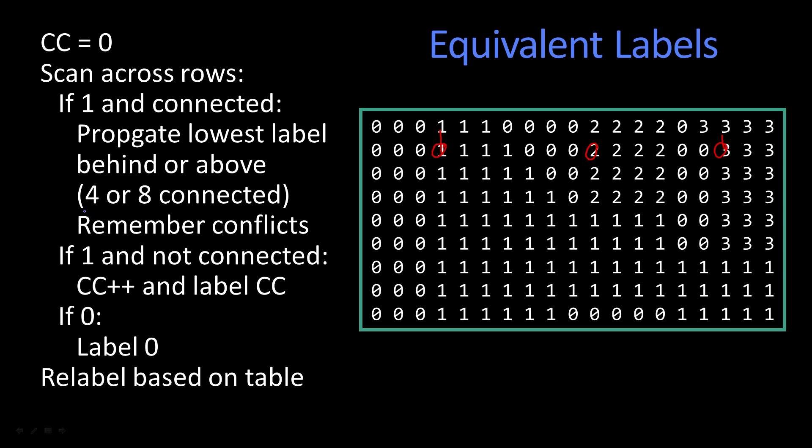But you see where it says here, remember conflicts. As I'm going through, when I'm labeling this pixel, I now have a conflict. Because when I look behind me, it says that I'm a one. And when I look above me, it says I'm connected to a two. So what I do is I pick one of those, maybe the one, but I remember that I've got a conflict there.